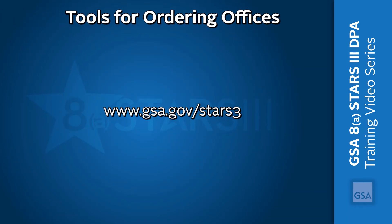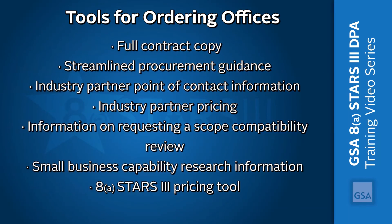The 8STARS III website has helpful tools for ordering offices, including the 8STARS III Ordering Guide. This guide defines roles and responsibilities for the ordering process and is full of helpful instructions for using 8STARS III. Check back often as rules change — the guide is updated often. Additional resources include full contract copy, streamlined procurement guidance, industry partner list with point of contact information, industry partner pricing, information on requesting a scope compatibility review, and small business capability research information.